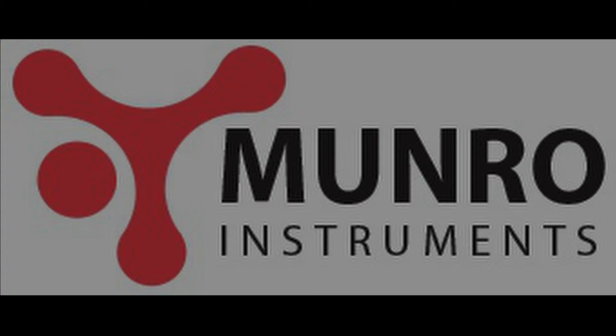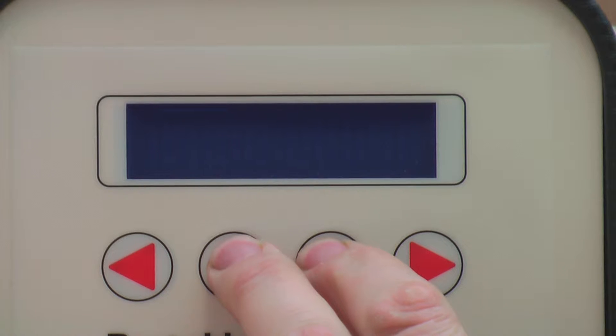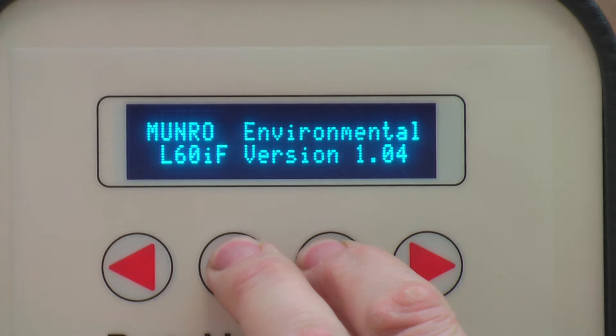The menus for the L60IF can be navigated by using the four arrow buttons on the front panel. To access the configuration menu, please press and hold the up and down buttons at the same time whilst turning on the Air Sampler. Keep pressing the button until the menu screen is clearly visible.